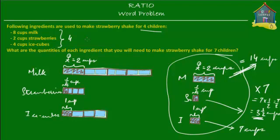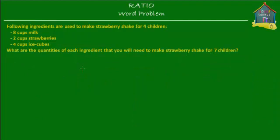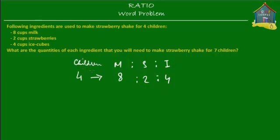That's just one method. Let me show you another method. Now let's use the method of ratios to get the answer. What we know is that four children are going to need milk, strawberries, and ice cubes in the ratio of eight to two to four — because that's eight cups of milk, two cups of strawberries, and four cups of ice cubes for four children.